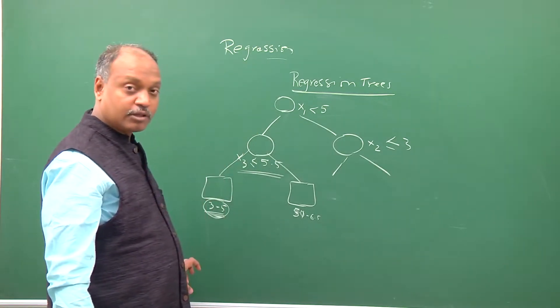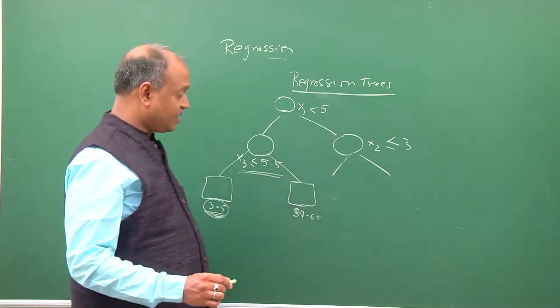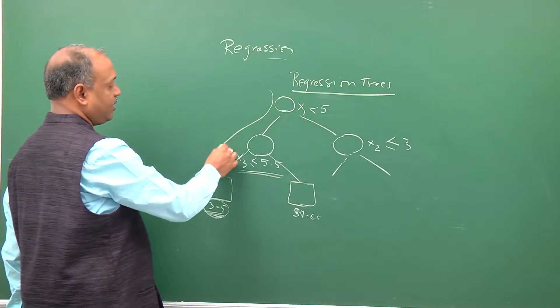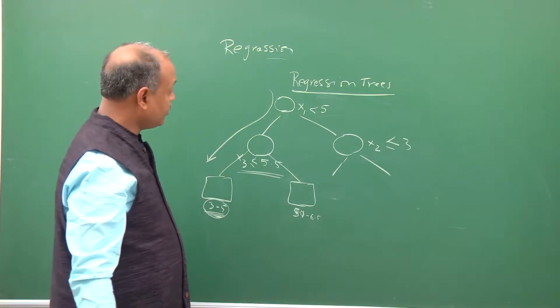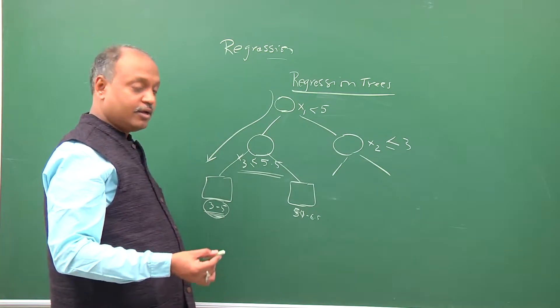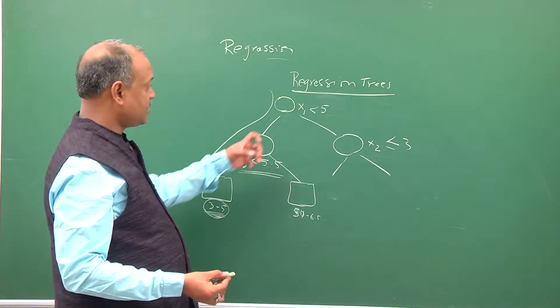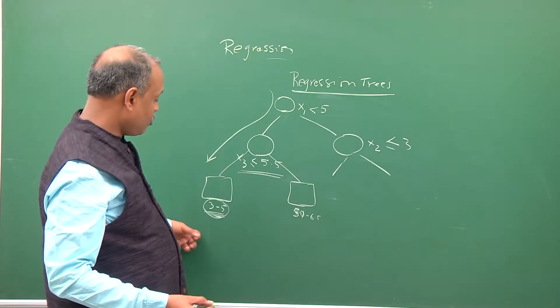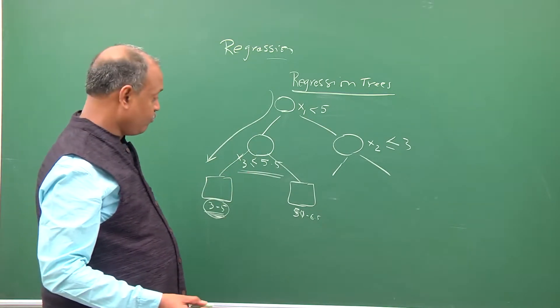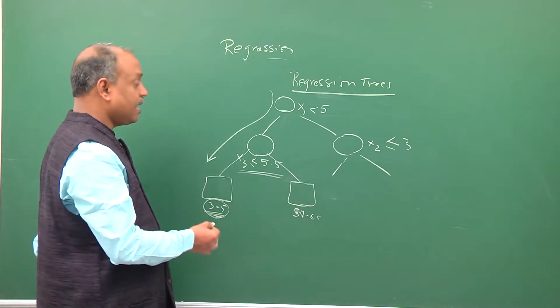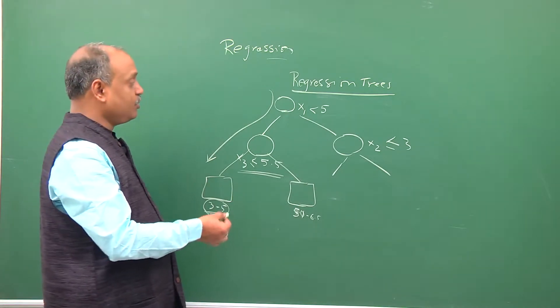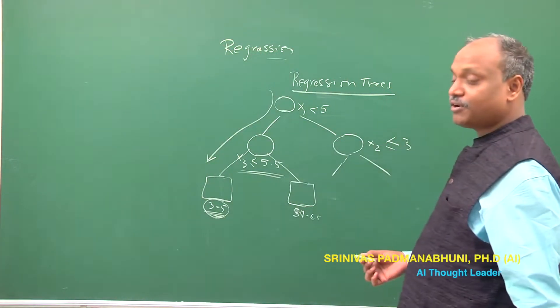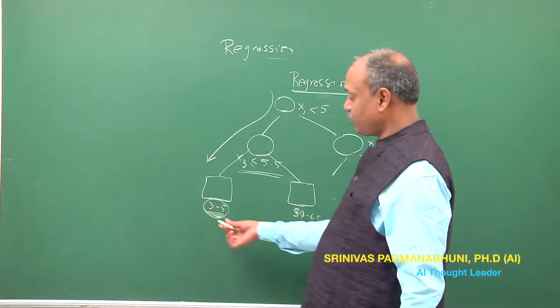Then just like the classification tree, we can here convert the path followed from the root all the way to the leaf node in the form of a rule which says x1 is less than 0.5 and x2 is less than 0.5, output would be between 3 to 5. So that is the regression tree rule generated.